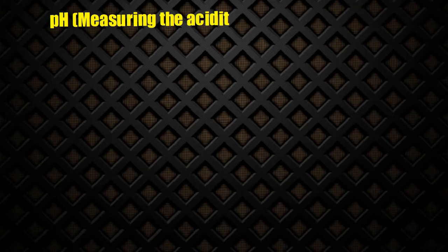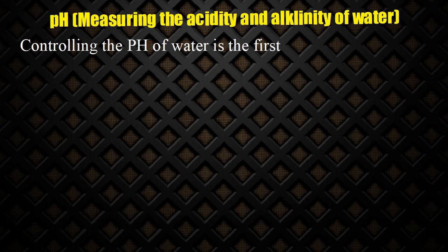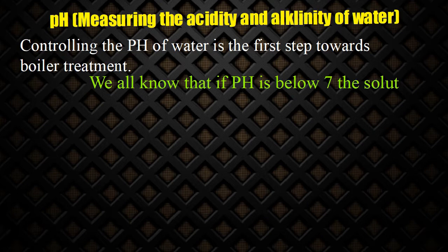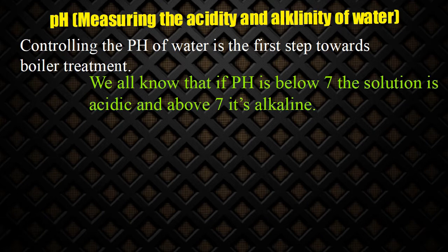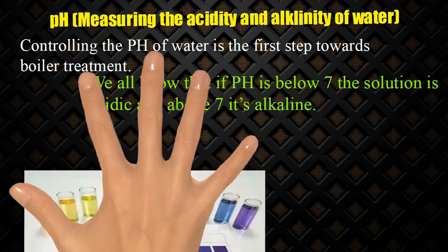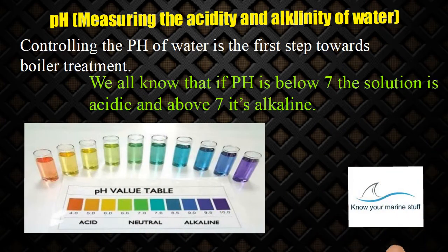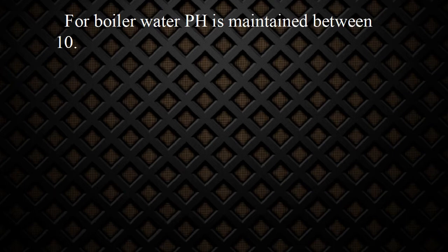Measuring the acidity and alkalinity of water: Controlling the pH of water is the first step towards boiler treatment. If pH is below 7, the solution is acidic, and above 7 it is alkaline. For boiler water, pH is maintained between 10.5 to 11.8, and that of feed water between 7 to 9.